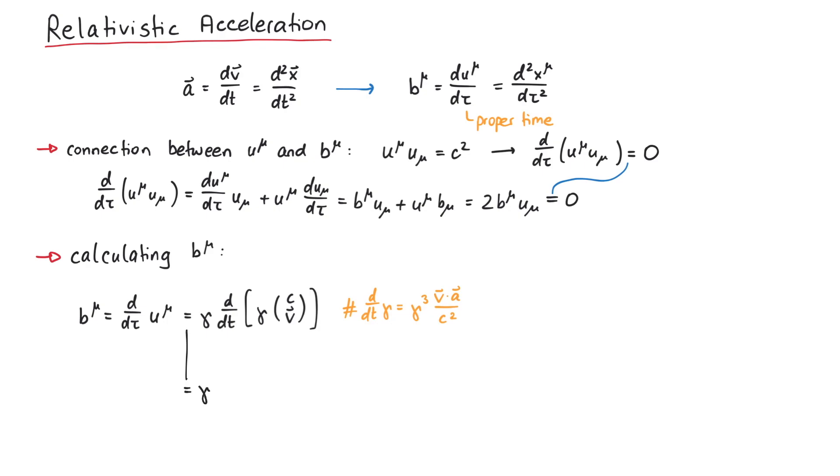For the zero component of b mu, we just have to differentiate gamma. But for the spatial components, we have to use the product rule. In summary, these are the components of the relativistic 4-acceleration b mu.